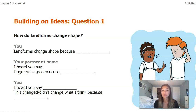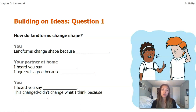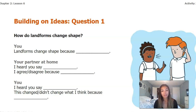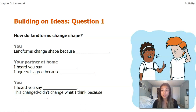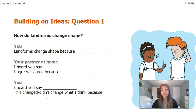I'm going to read through the sentence stems, then you'll pause the video and share. You'll start by saying: 'Landforms change shape because blank.' Your partner says: 'I heard you say blank. I agree or disagree because blank.' Then you say: 'I heard you say blank. This changed or didn't change what I think because blank.' Go ahead and pause the video, find somebody at home, and answer the question: how do landforms change shape?